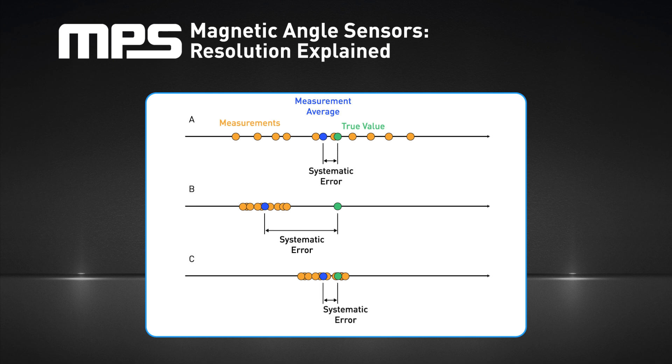First is the systematic error component, which stays constant across multiple measurements performed under the same conditions. This error can be estimated as the difference between the average of a large number of measurements and the true value of the measurement.